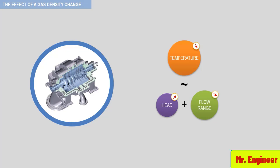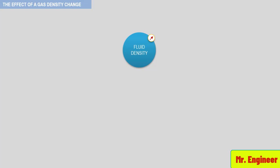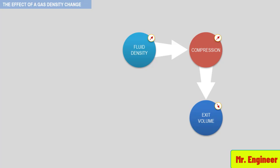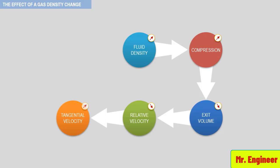This fact will be explained in detail when we observe the discharge velocity triangle of any compressor stage. What is important to understand and remember is that increasing fluid density will result in higher compression through the impeller or blade row. This will result in a reduced exit volume for a given volume of inlet flow. A reduced exit volume flow acting on the same vane area will result in a reduced velocity relative to the blade. Recall that a reduced velocity relative to the blade will produce a higher tangential velocity and, of course, a correspondingly higher produced head.